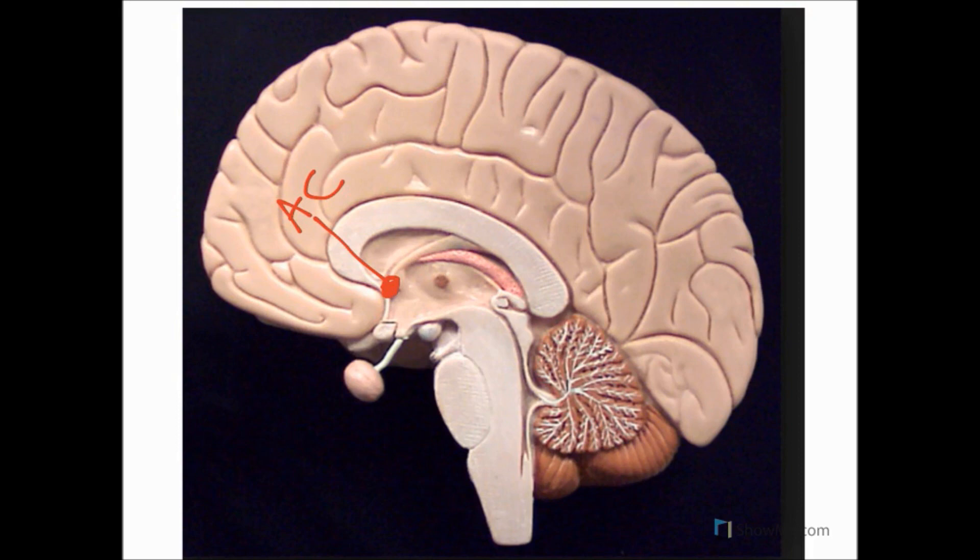The other structure I want to highlight is this structure down here, which is the optic chiasm. If we draw a line between those two, we've marked out that anterior border or rostral boundary, so that goes from the anterior commissure to the optic chiasm.